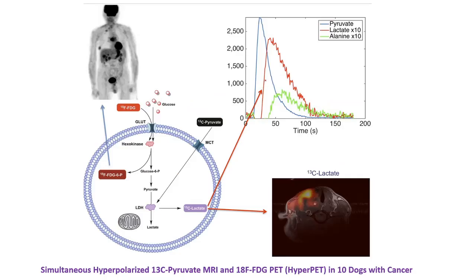About 85% of glucose in cancer cells is converted to lactate — this is the Warburg effect. This is demonstrated by an experiment in which pyruvate labeled with C-13 was transported into cells via the MCT transporter. The C-13 pyruvate was converted to C-13 lactate by the enzyme lactate dehydrogenase (LDH). The resulting spectrum shows that lactate expression is significantly higher in cancerous cells.